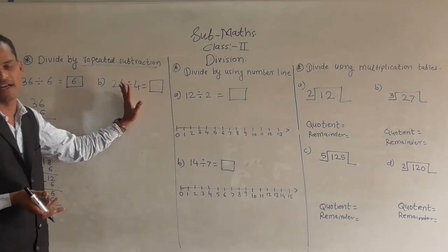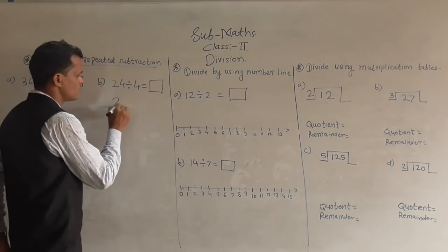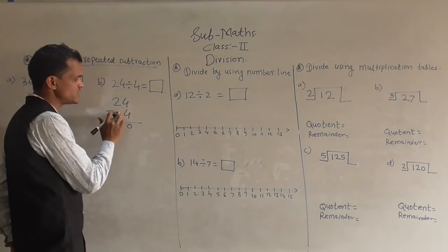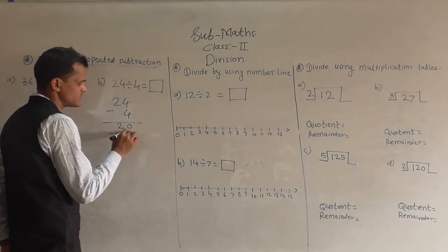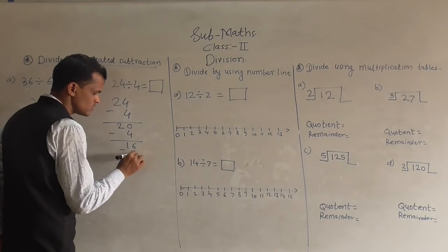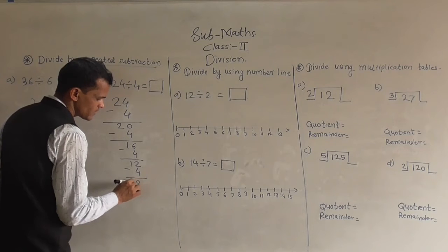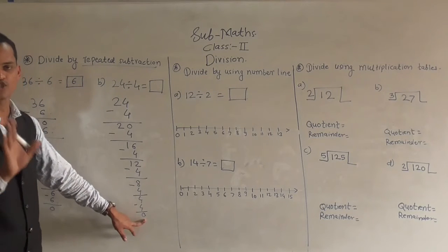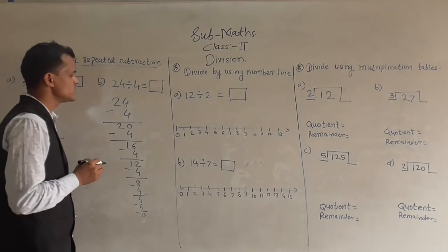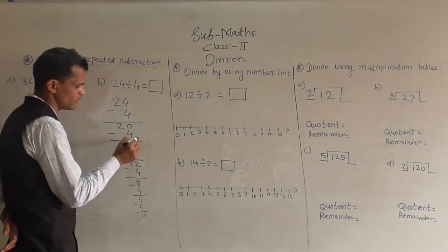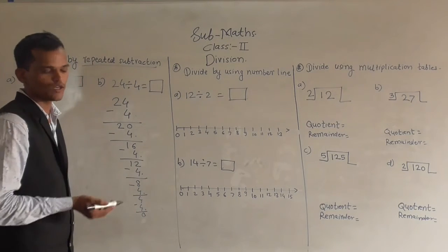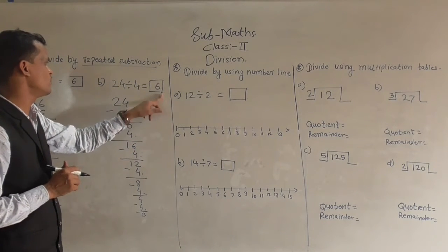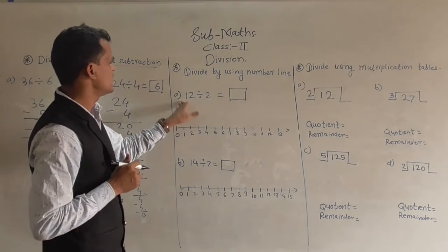Next example: 24 divided by 4 — we have to find out the quotient. Write 24 and every time subtract 4: 24 minus 4 is 20, 20 minus 4 is 16, 16 minus 4 is 12, 12 minus 4 is 8, 8 minus 4 is 4, and 4 minus 4 is 0. When 0 comes, stop and count how many times you subtracted 4: 1, 2, 3, 4, 5, 6 times. So 6 is our quotient. You can cross-check: 4 sixes are 24, so our answer is correct.